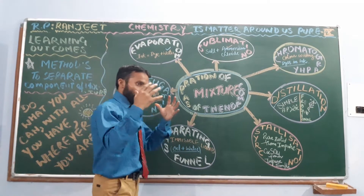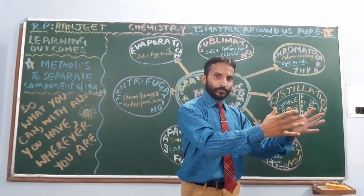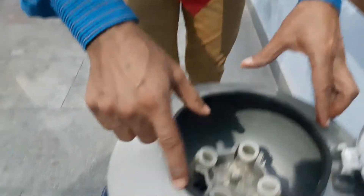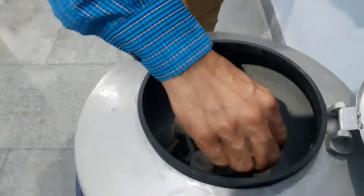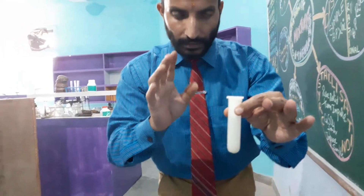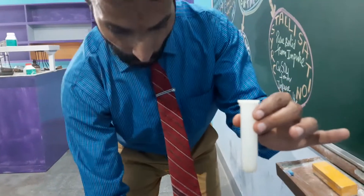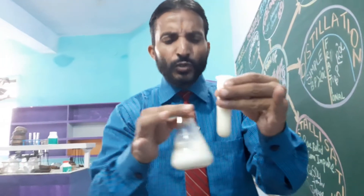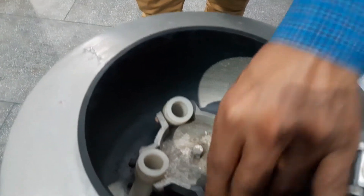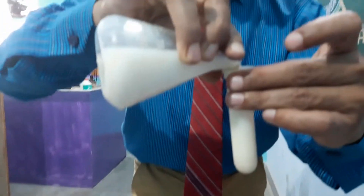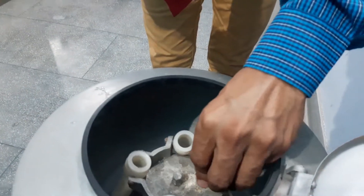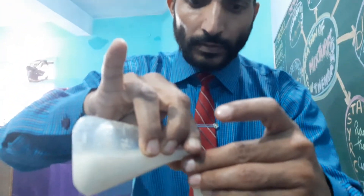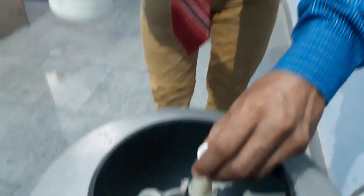Let us use this technique practically in the lab. This is our centrifugation machine, and these are the centrifugation test tubes. I will fill milk here — we will separate cream from the milk. There are four chambers. We cannot separate cream from milk by filtration because the fat particles are very small. I will fix the tubes in their positions and switch the machine on. You will see there will be a layer of cream that comes to the top.